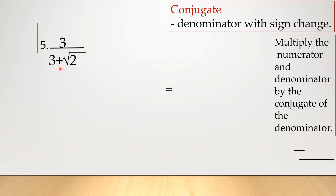Now look at this given — it has a plus sign in the denominator. In this case, we can't just multiply by the radical like we did before, because we can't get rid of the radical sign that way. Instead, we get the conjugate of the denominator. When we say conjugate, we simply change the sign: if the denominator has plus, the conjugate has minus; if it has minus, the conjugate has plus. Then we multiply that conjugate to both numerator and denominator.